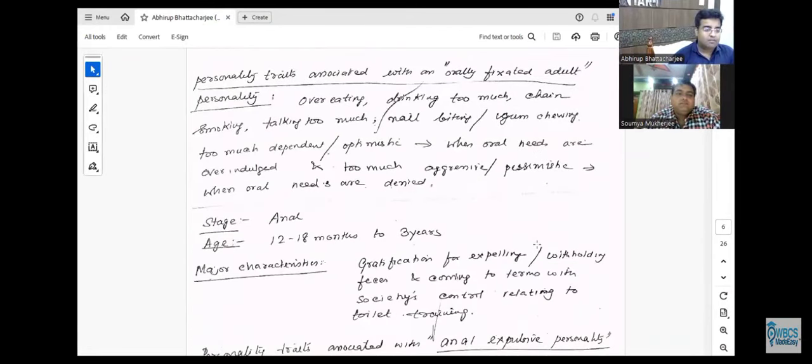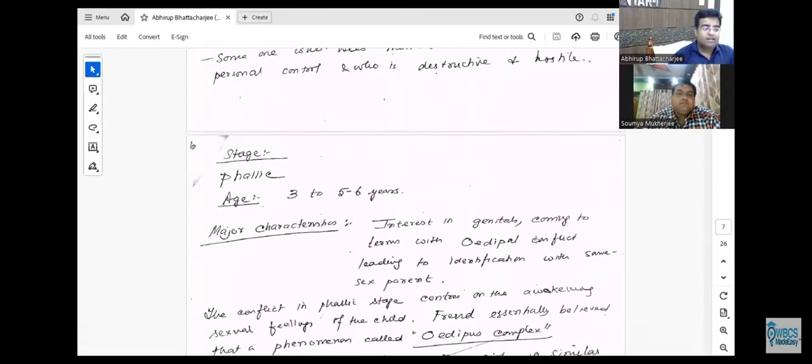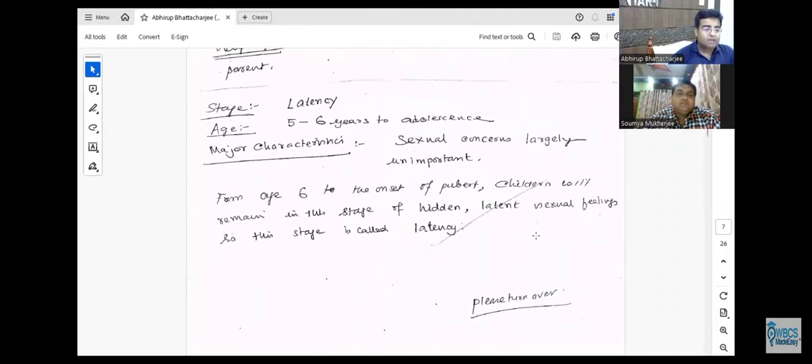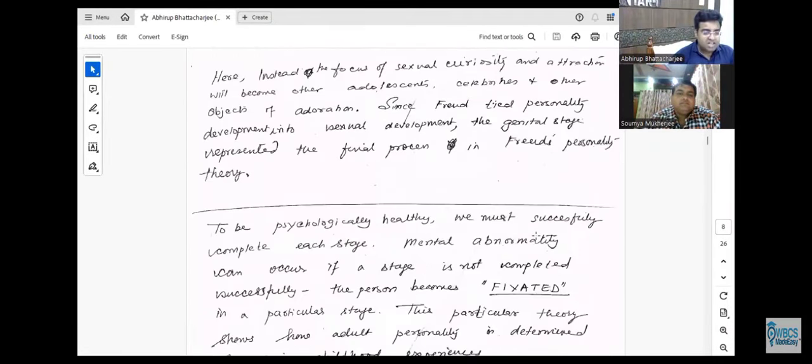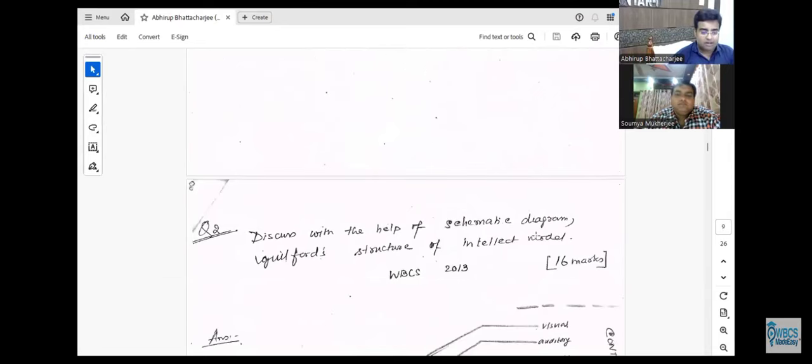Oral, phallic, oral, anal, phallic, latency, genital - the stages of psychosexual development.